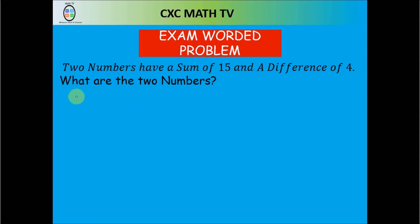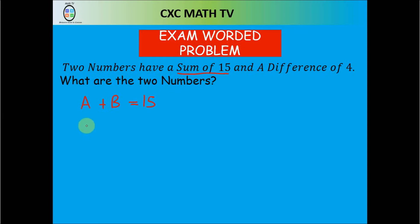So let's call the two numbers a and b. They told us the sum of the two numbers is 15, so a plus b equals 15. And they tell us the difference of the two numbers is 4, so a minus b equals 4. In worded problems, you can do any method you want to solve the question, so we're going to do it both ways.